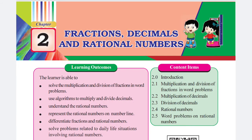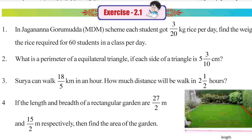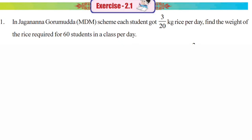Hello students. I am going to explain 7th class new syllabus 2nd chapter, Fractions and Decimals, Exercise 2.1, 1st problem. In the Jagannana Gorumuddha scheme, each student got 3/20 kg rice per day. Find the weight of the rice required for 60 students in a class per day.